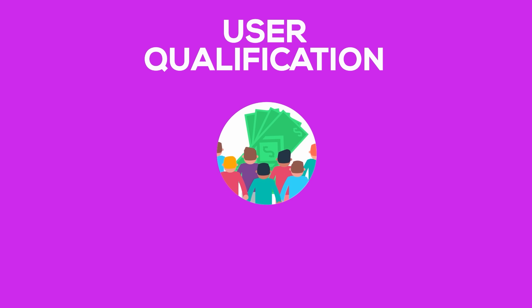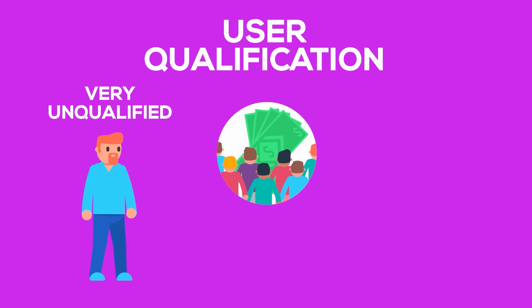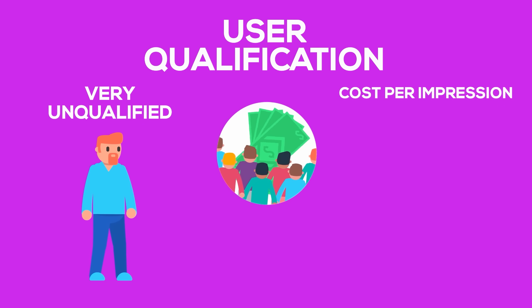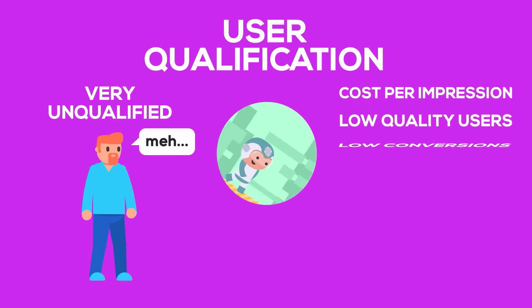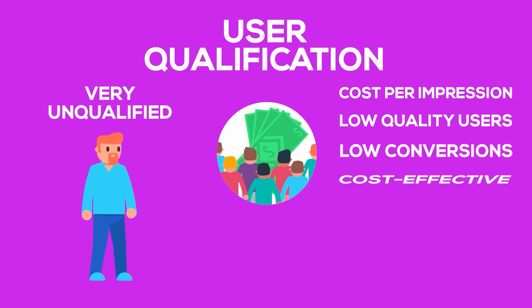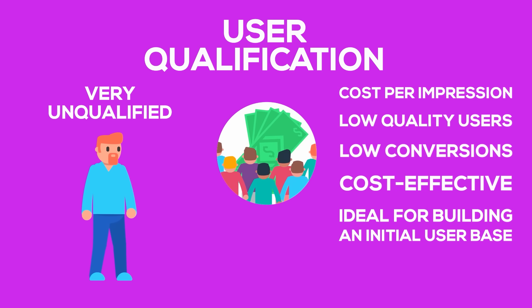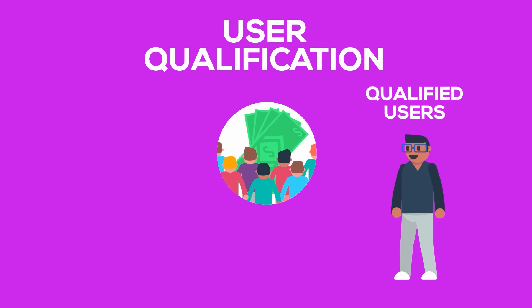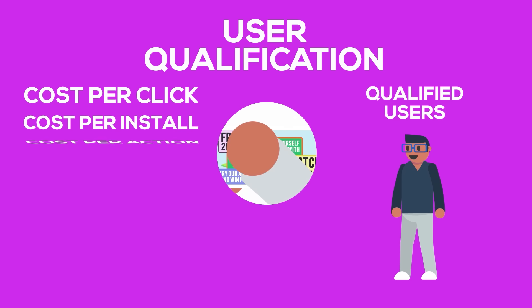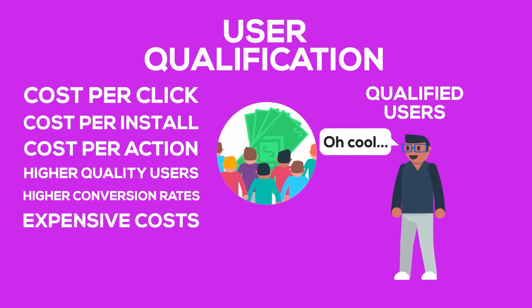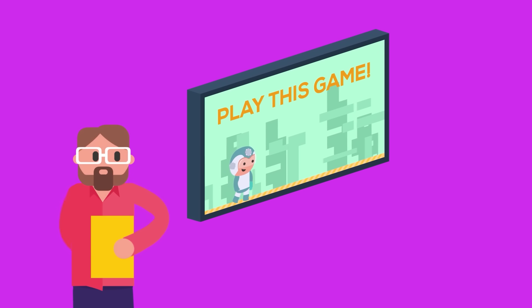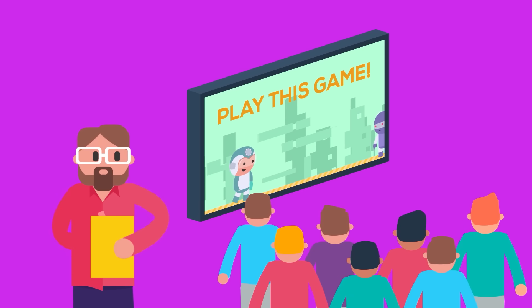Users are commonly bought on the basis of how qualified they are. On one side of the spectrum are very unqualified eyeballs, and you pay for them on a cost per impression basis — the ad network simply guarantees that users will be shown your ad. The quality of these users is typically low, and only a small portion will convert to users of your game, but it can be a cost-effective way to get acquisition data and provide an initial user base. As you become more confident in your retention and monetization metrics, you may look toward cost per click, cost per install, or cost per action campaigns, where you only pay for users that perform certain actions — though you will pay much more for that certainty.